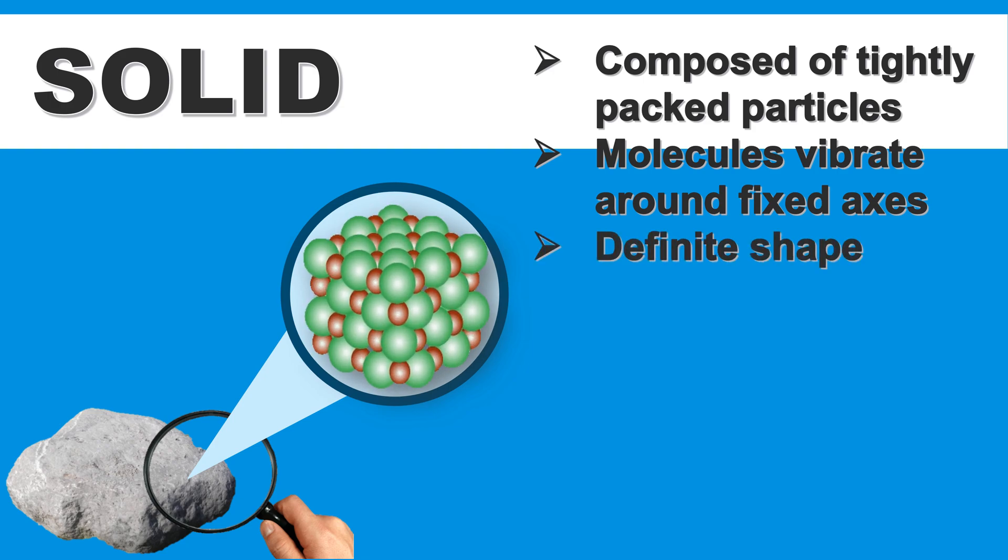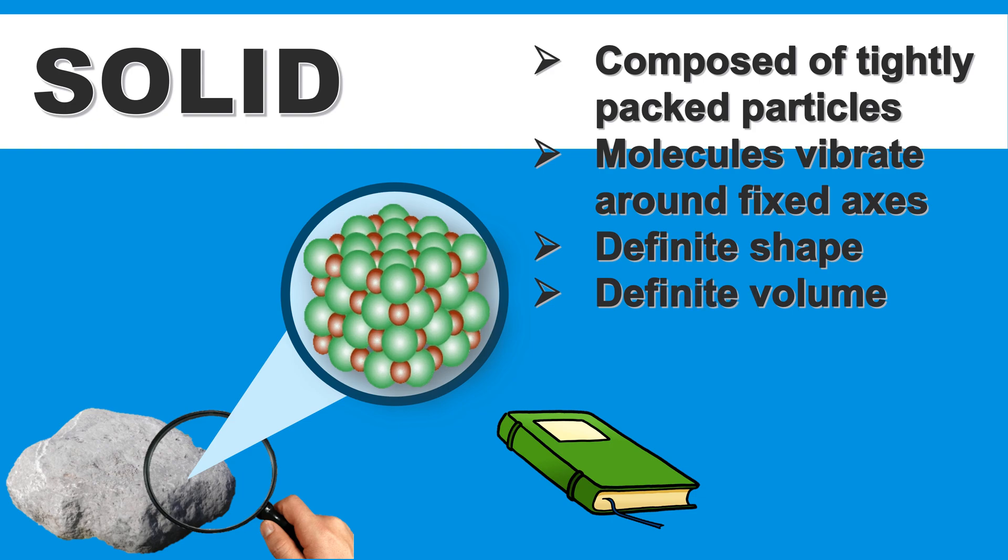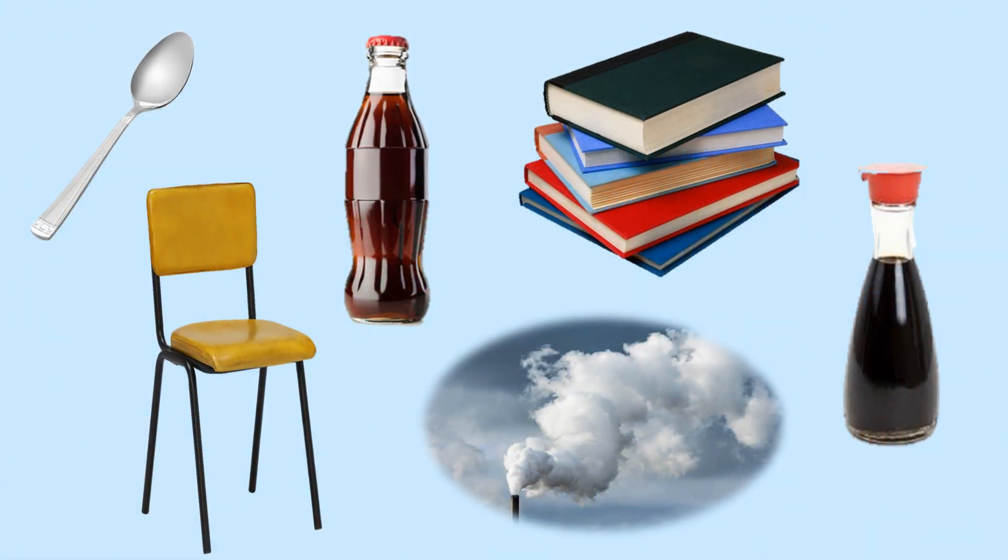For example, a book. A book is a solid with a rectangular shape. Solid has a definite volume. Here are some objects. Can you identify which of these are solid? Books. What else?